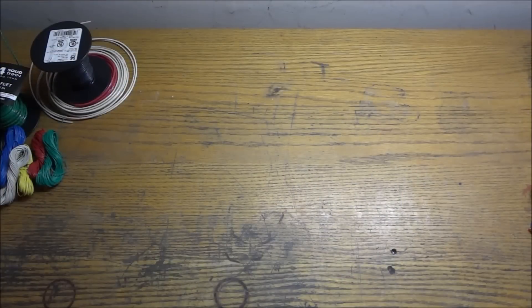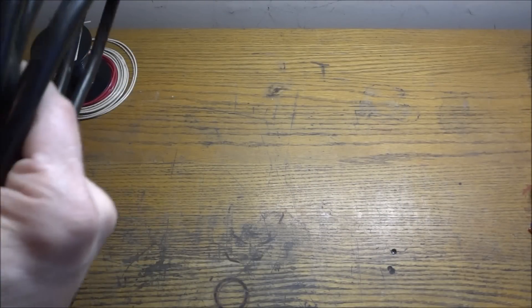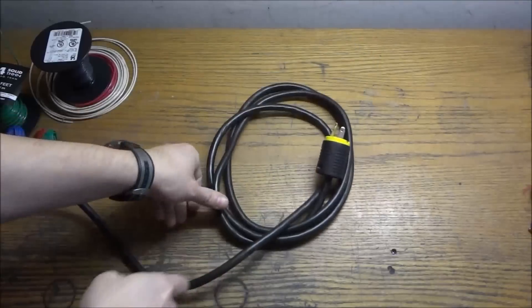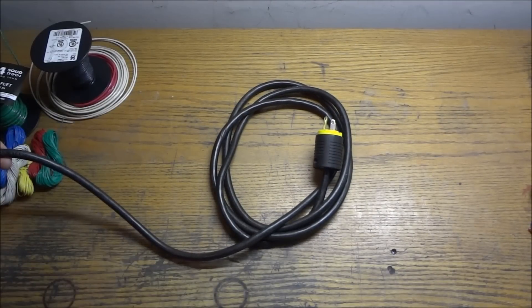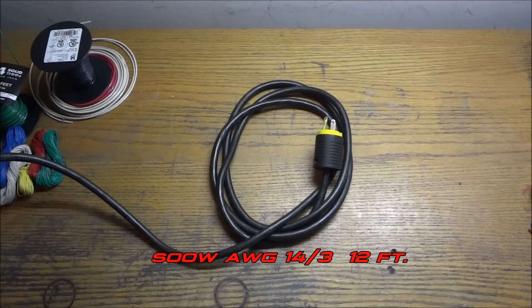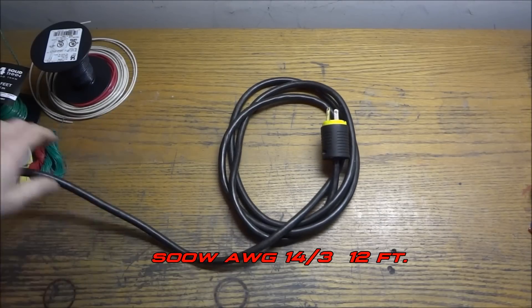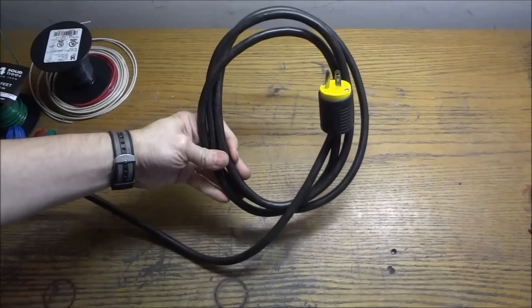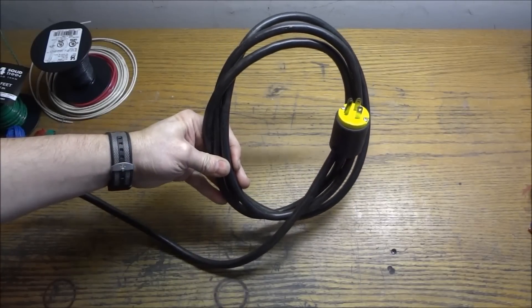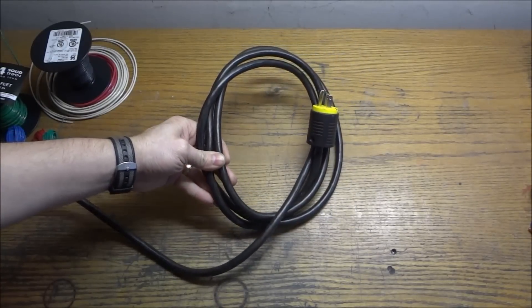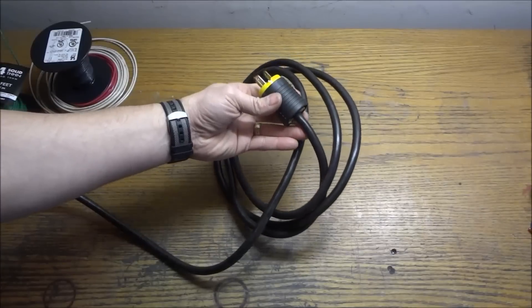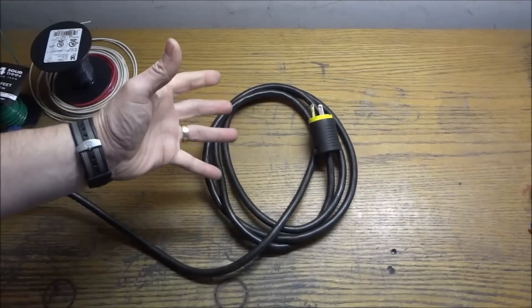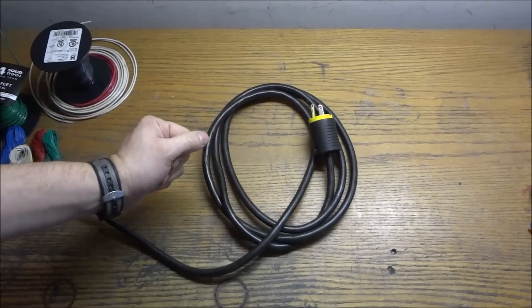But the first thing is our cable to bring our power into the panel and I'm using 14-3 and this is SOOW cord or SOO cord. You can pick this up at probably your local home center, maybe a Home Depot or Lowe's, but wire and cable to go also has this and if you're going to be buying any other cable there you might as well just get it all at the same place.